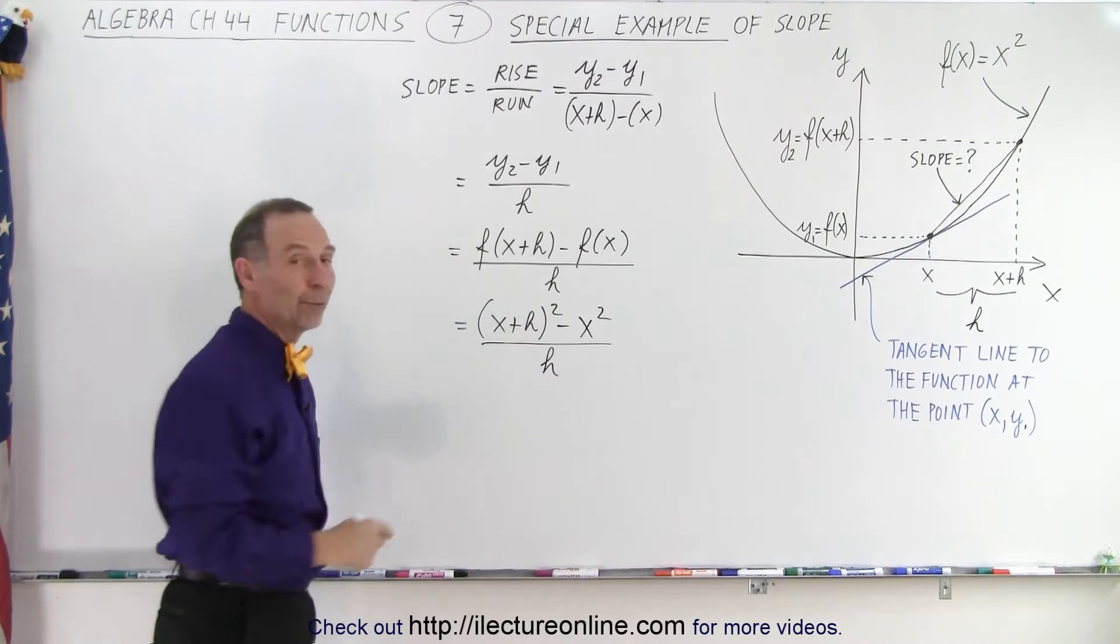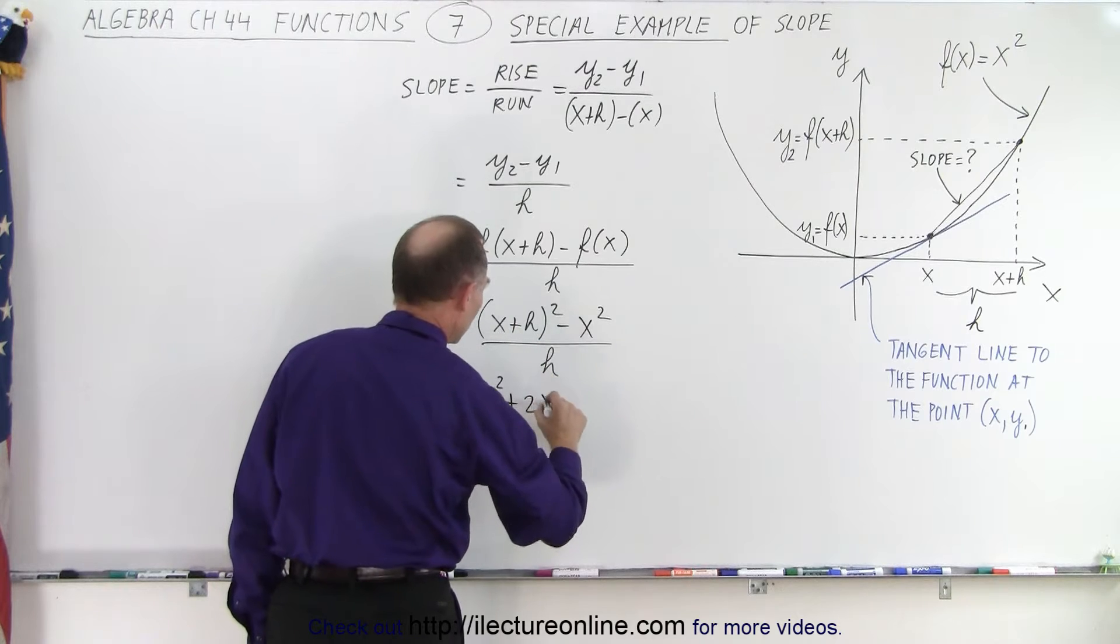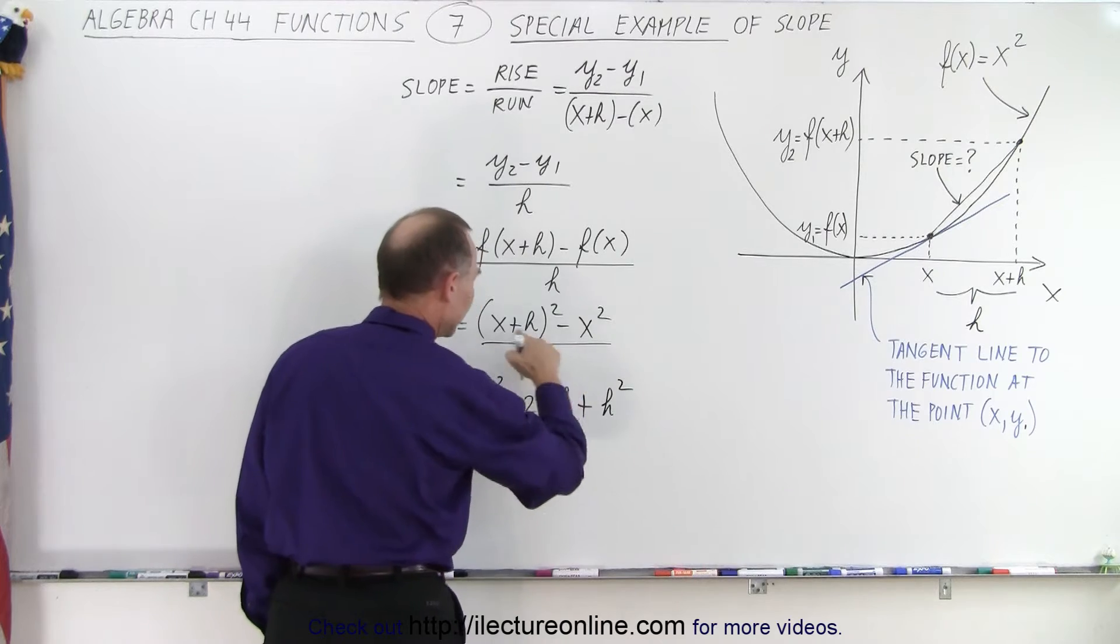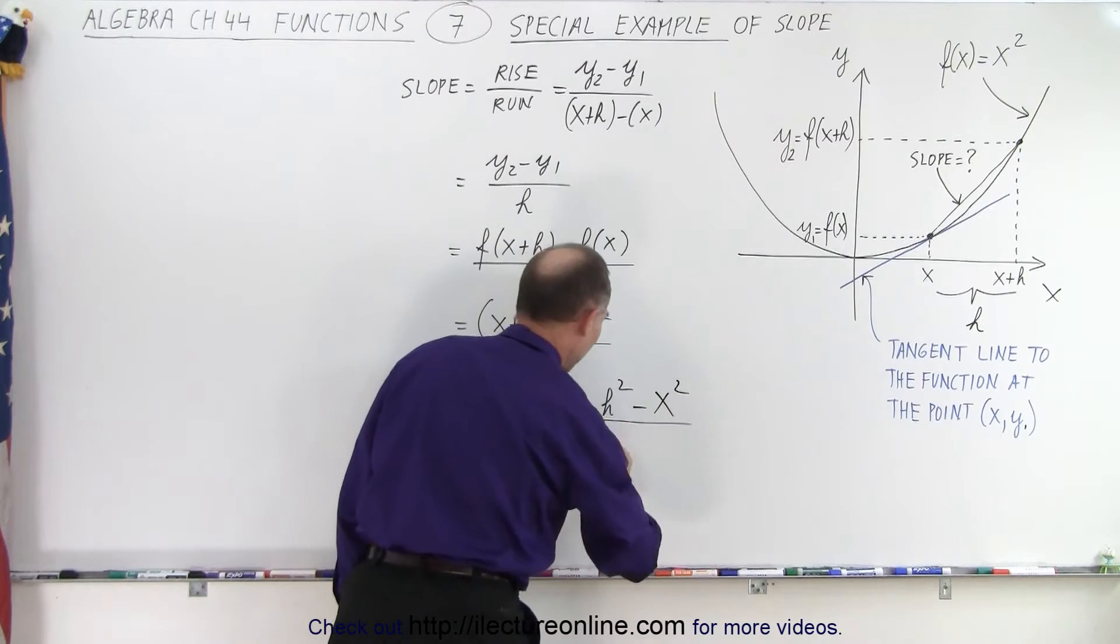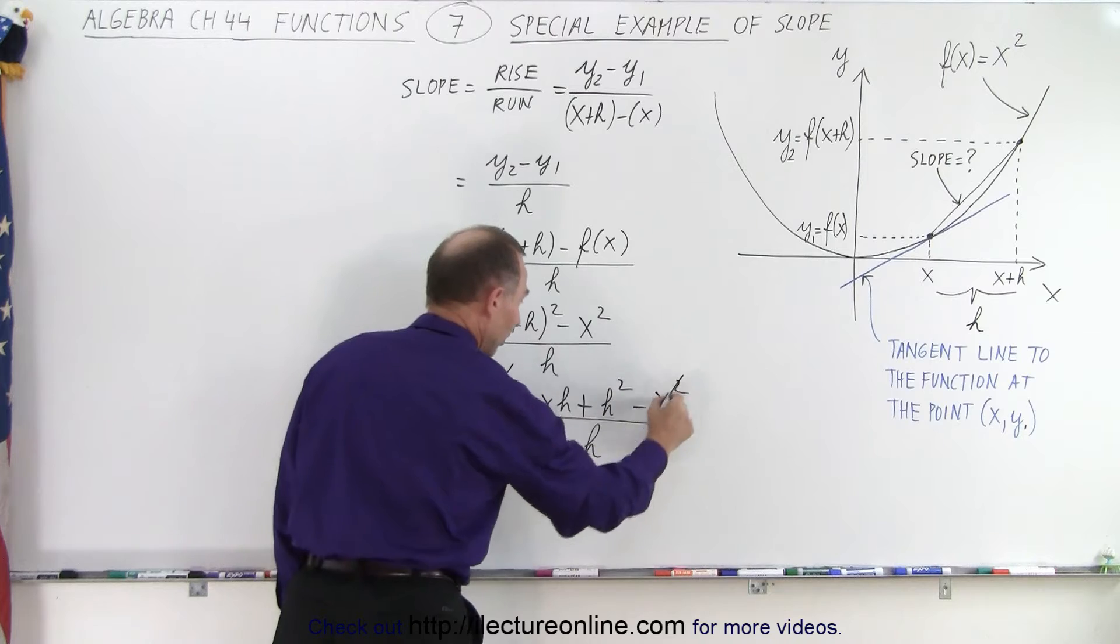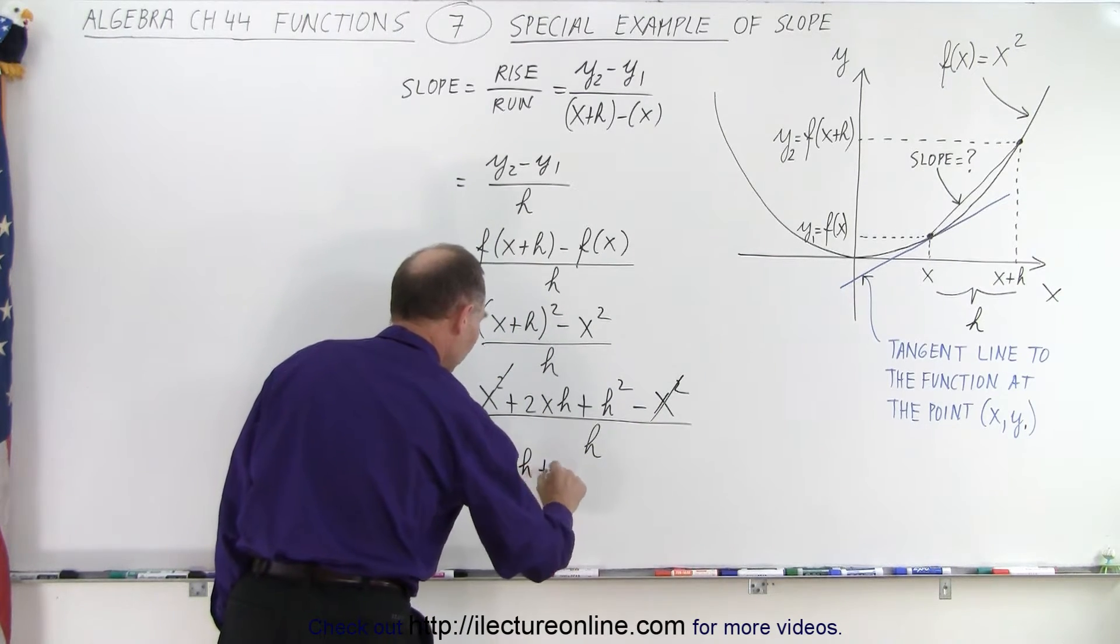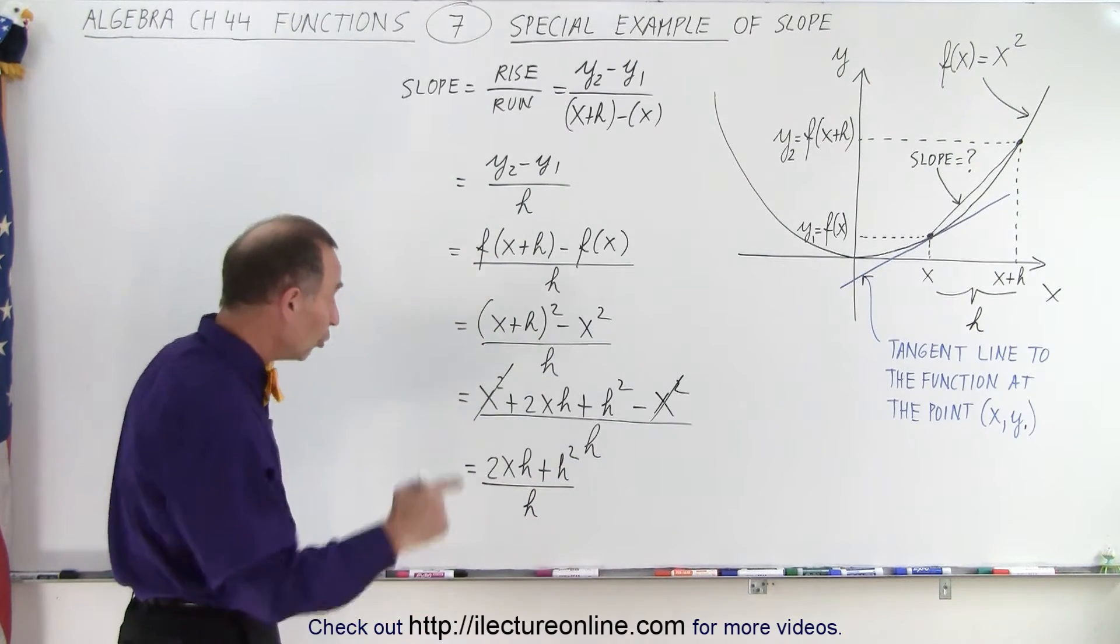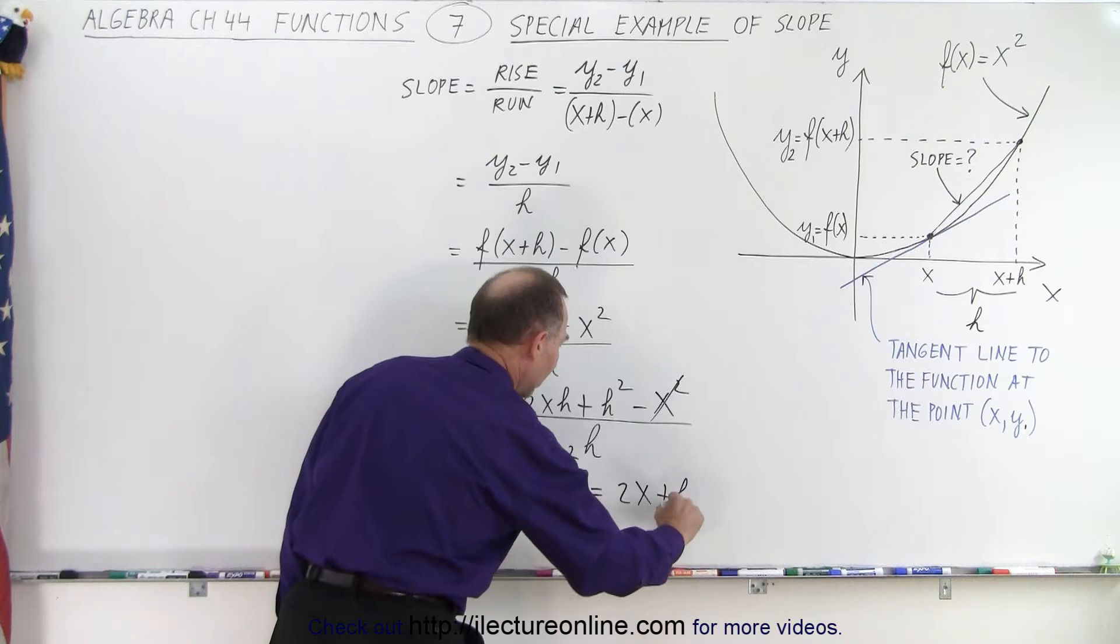Now we have to multiply this out and see what we get. So this is equal to the first term squared plus twice the product, 2xh, plus the last term squared, h². And that's minus x², we can't forget, minus x², all divided by h. Now we realize that this x² and this x² cancels. And so now all we have left is 2xh + h² divided by h. Now we can divide h into the numerator because every term in the numerator contains an h. So this is equal to 2x + h.